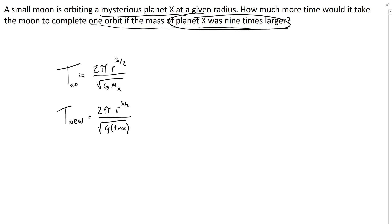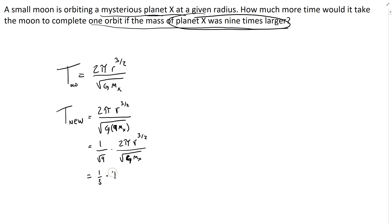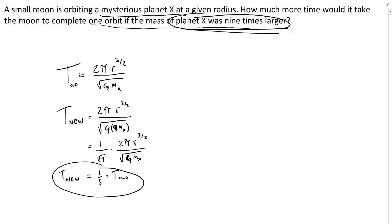Pulling the 9 out of the square root: T_new = (1/√9) × (2π·r^(3/2) / √(G·m_x)) = (1/3) × T_old. The new orbital period is one-third of the old one, meaning it would take a shorter time — because there is more mass and therefore a stronger gravitational force acting as a greater centripetal force, so the moon completes its orbit faster.